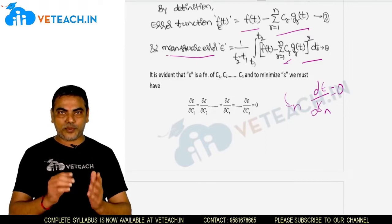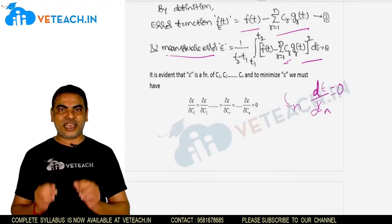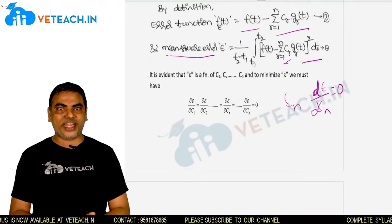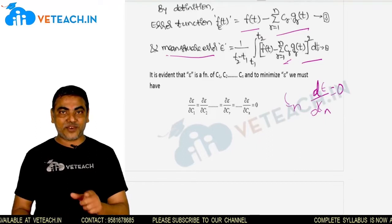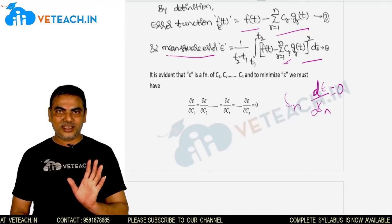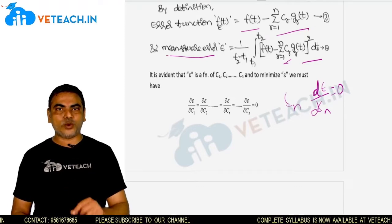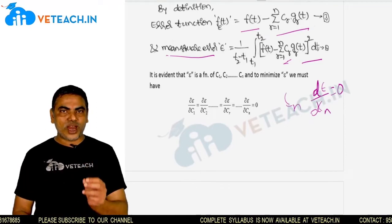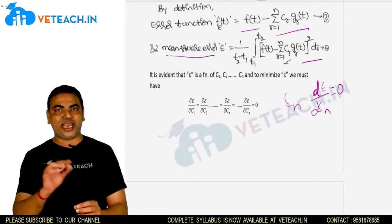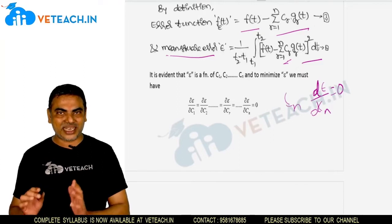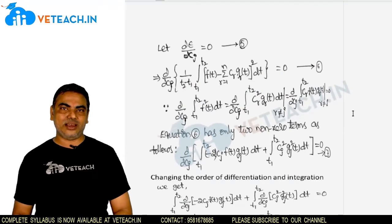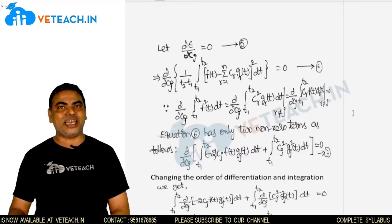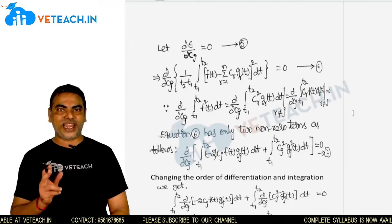In the previous signal approximation we used total differentiation, because ε was a function of a single component c1. But here ε is a function of c1, c2, and so on up to cn. That is why we have to take partial differentiation. When differentiating with respect to c1 we consider remaining coefficients as constants, and similarly for each coefficient. Let us generalize: consider cj as the required coefficient, differentiate the mean square error with respect to cj and equate to 0 to find cj.